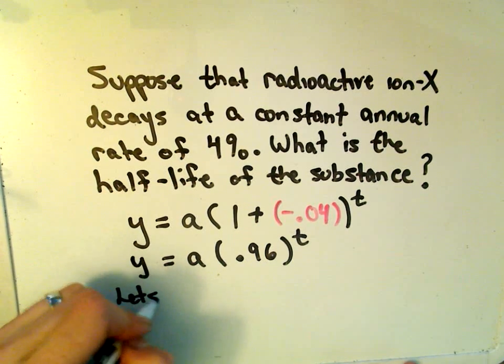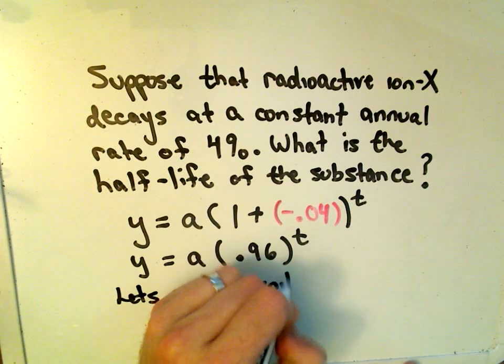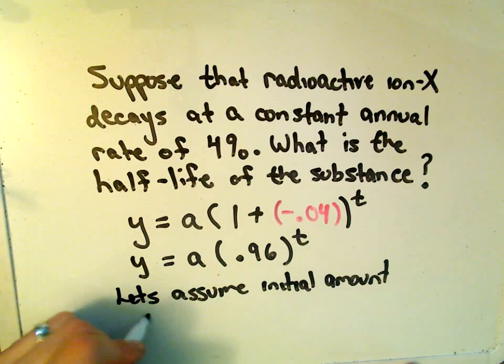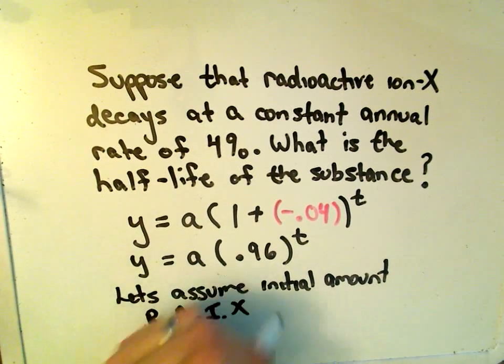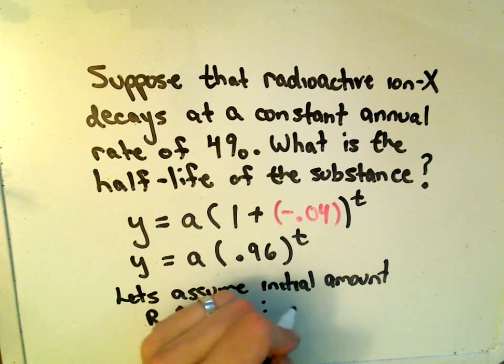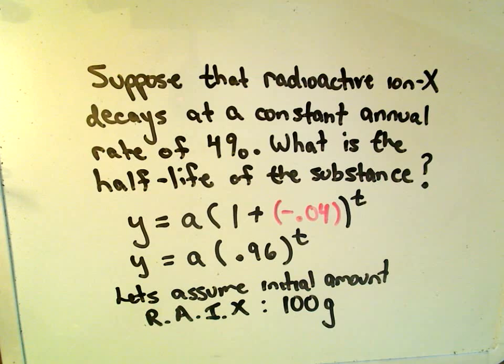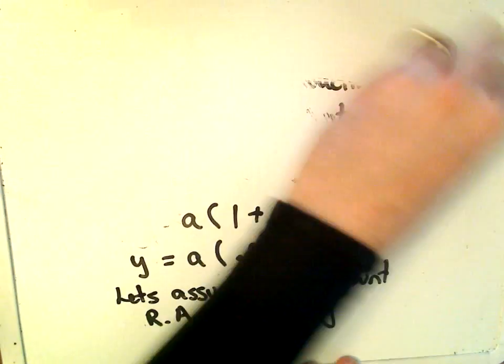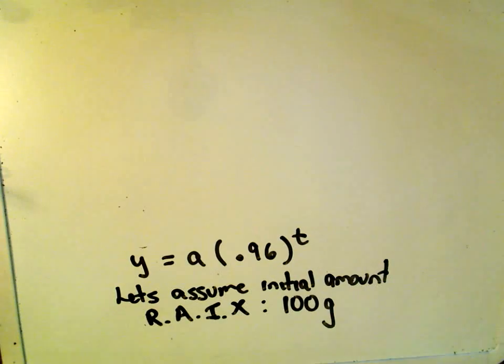Let's just assume the initial amount of our radioactive ion X. Suppose our initial amount of this radioactive ion is just 100 grams. The half-life is going to be the same no matter what amount you start with. We could do it generically in terms of a, but I like to use numbers because they make more sense.